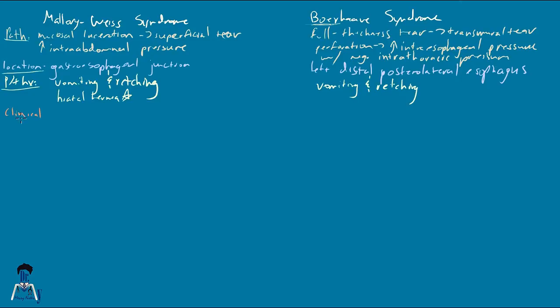Now let's talk about clinical symptoms. For Mallory-Weiss it's going to be a sudden onset of hematemesis — that's the main feature. Depending on the amount of blood loss, the patient might have signs of hypovolemia like delayed capillary refill, pallor, cool clammy skin, tachycardia, and hypotension. What you need to know is there will be no dysphagia — Boerhaave may have dysphagia, but if you see dysphagia it's not Mallory-Weiss. While there's no dysphagia in Mallory-Weiss, you might have odynophagia — pain on swallowing, but not difficulty swallowing.